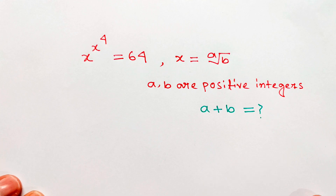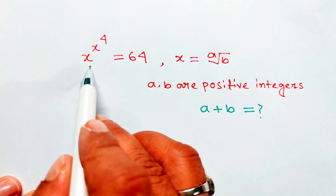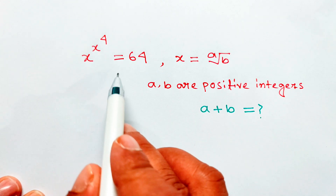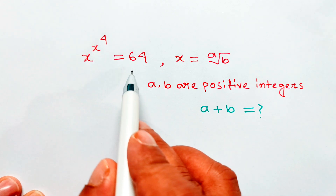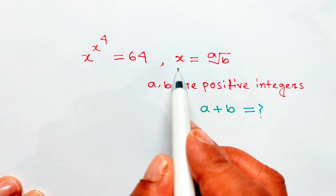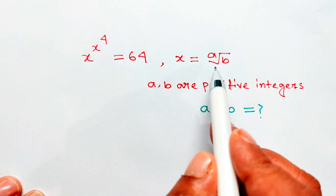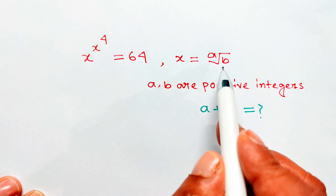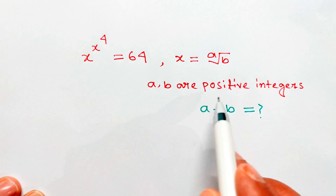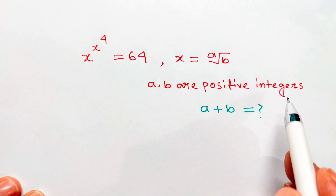Hello everyone. In this video we have been given x whole to the power x to the power 4 equal 64, and x equal a root of b, where a and b are positive integers.